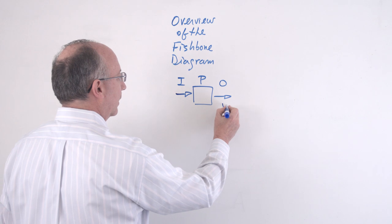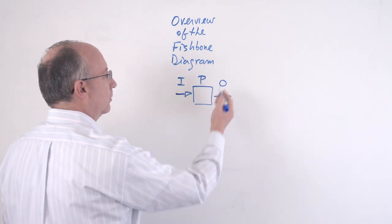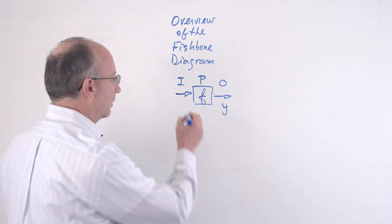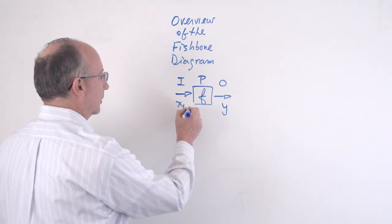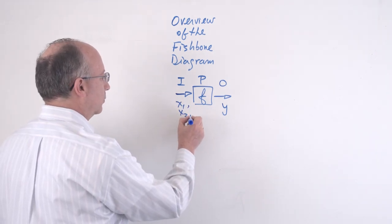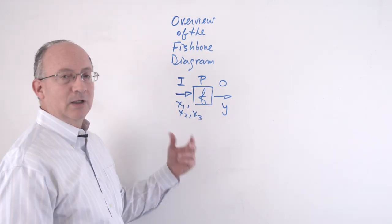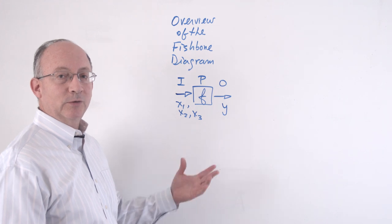This is also expressed as the letter Y to indicate the output, a transformation function of the various inputs that we get, such as X1, X2, X3, and so on. And so what this really represents is that the process itself is a system of causes.